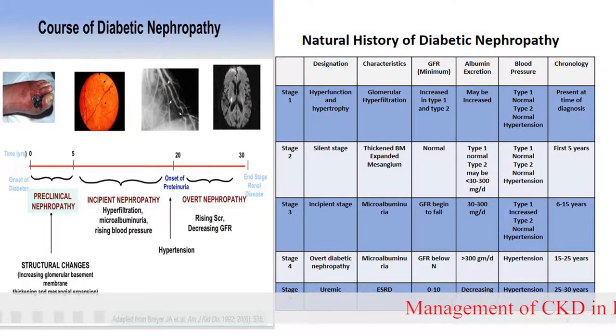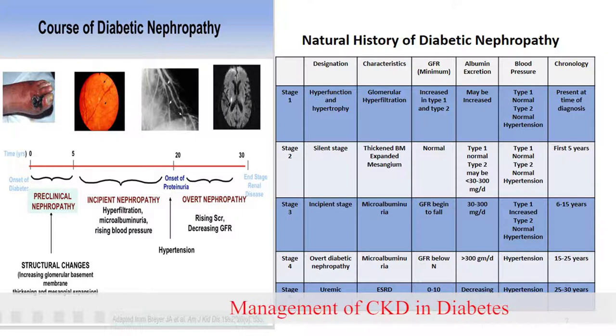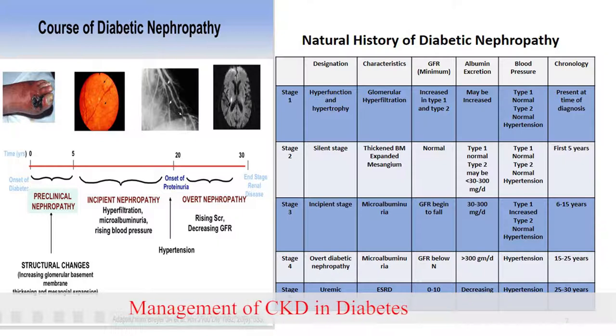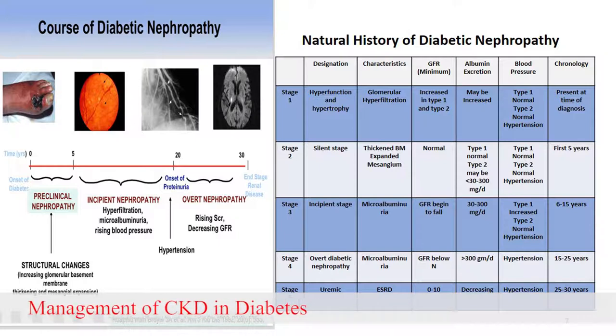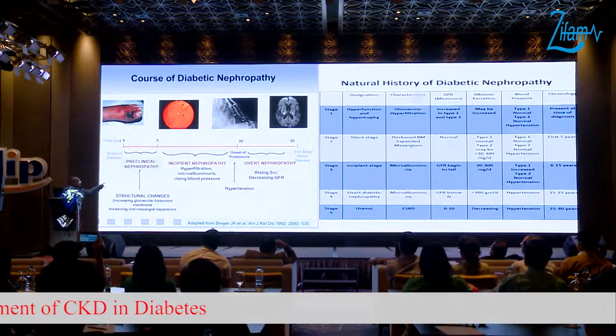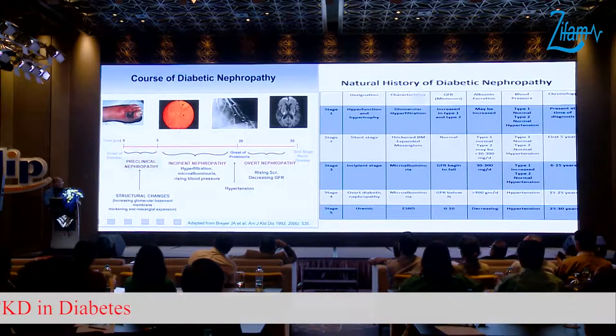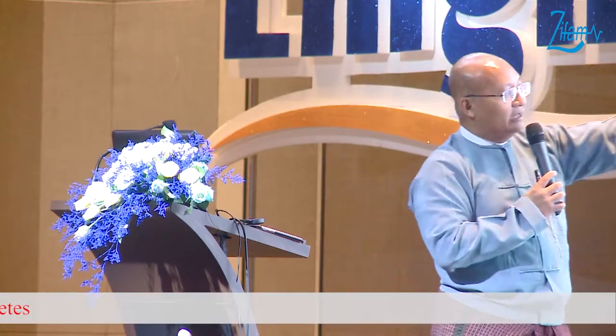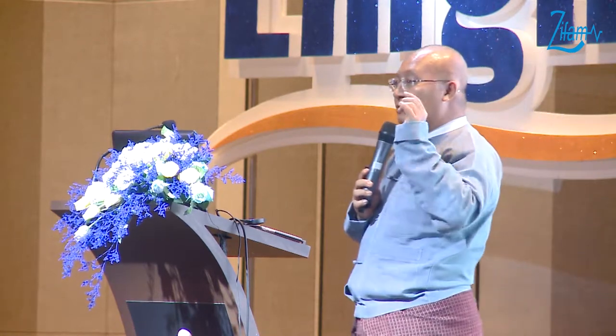In preclinical nephropathy, we can identify hyperfiltration and microalbuminuria with a rising blood pressure. This is the time we can intervene. Later there may be hypertension, a rise in creatinine, and a decrease in GFR. We need to catch diabetic nephropathy at that early stage. That is why we always advise all primary care physicians to perform urinary ACR testing. If you measure creatinine, use drugs that delay progression of renal disease.